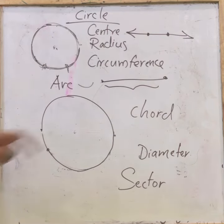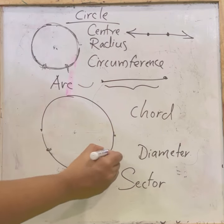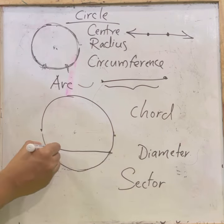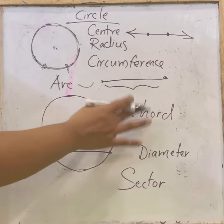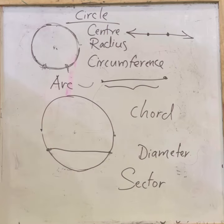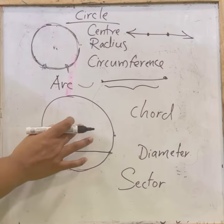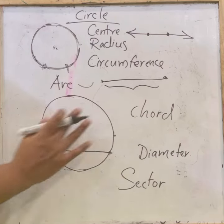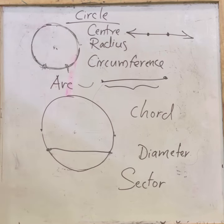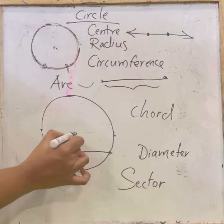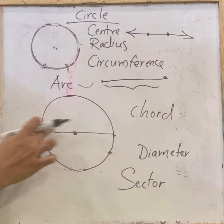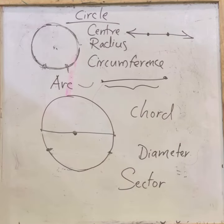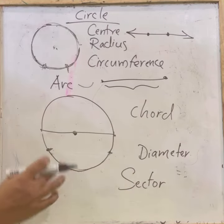Coming to chord — if there are two points and we join them, you get the chord. The chord divides the circle into two segments: the major segment and the minor segment. If the chord is drawn through the center, then it is the diameter.